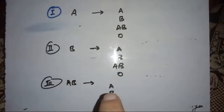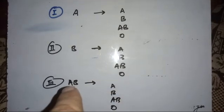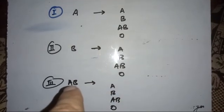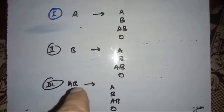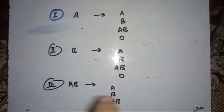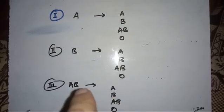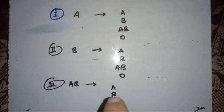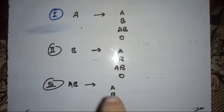Now, AB to B: AB has both A antigen and B antigen. B matches but A does not — there are antibodies against A in the B blood group. So there will be a transfusion reaction.